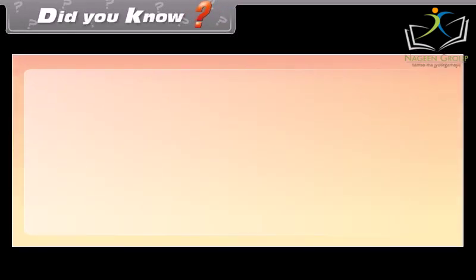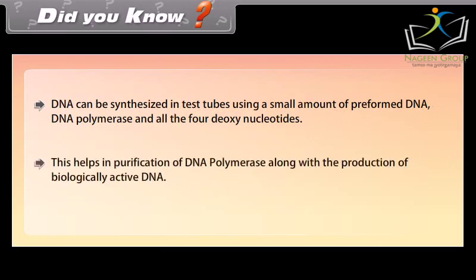DNA can be synthesized in test tubes using a small amount of pre-formed DNA, DNA polymerase, and all four deoxynucleotides. This helps in the purification of DNA polymerase along with the production of biologically active DNA.